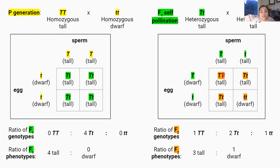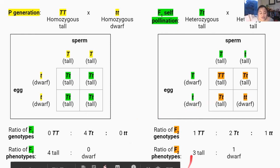If the genotype is big T big T, the phenotype will be a tall pea plant. If the genotype is big T little t, the phenotype will still be tall because the big T allele is dominant to the dwarf little t allele. But if the genotype is little t little t, the phenotype will be a dwarf pea plant. The genotype ratio of the F2 generation is 1 big T big T : 2 big T little t : 1 little t little t. But the phenotype ratio is three tall pea plant offspring to one dwarf pea plant offspring.